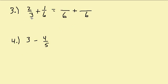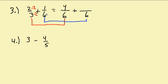We have a common denominator of 6. For the fraction with denominator 3, we multiply 3 by 2 to get 6, so we also multiply the numerator by 2, giving us 4. For the fraction with denominator 6, we multiply by 1, so the numerator stays 1. Now we combine the numerators: 4 plus 1 over 6 equals 5 over 6. There's our answer.